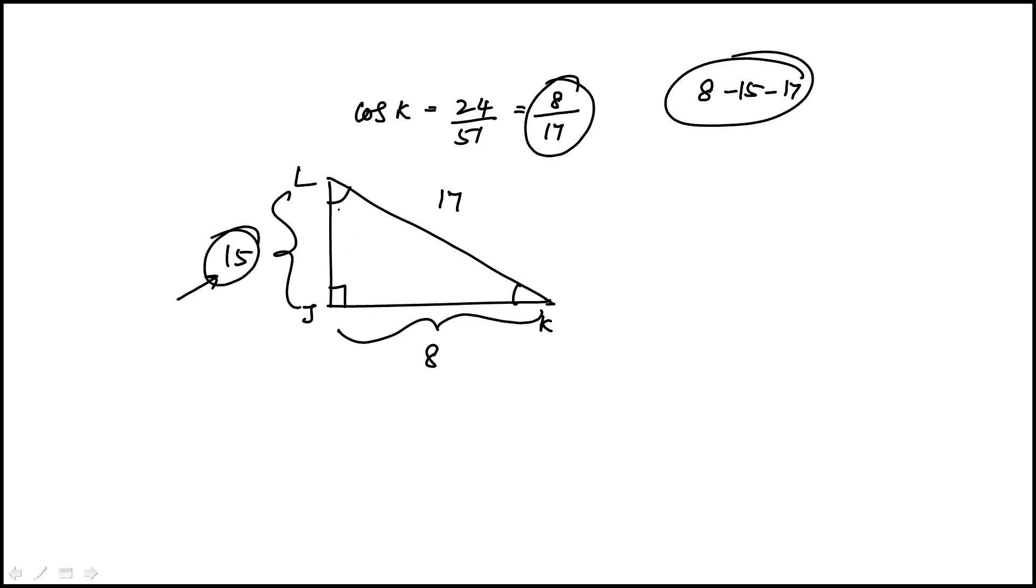The question is what is the value of cosine L? So cosine L would be 15 over 17, and that's the answer.